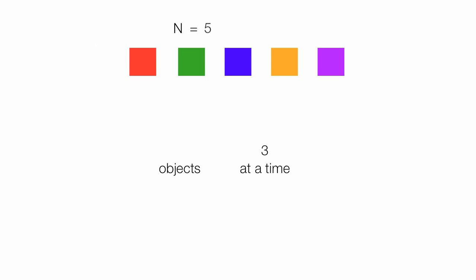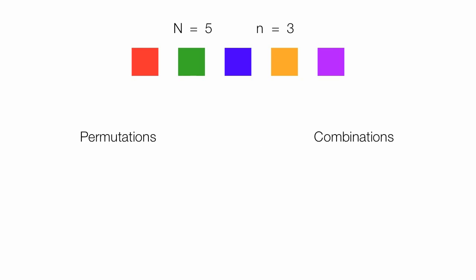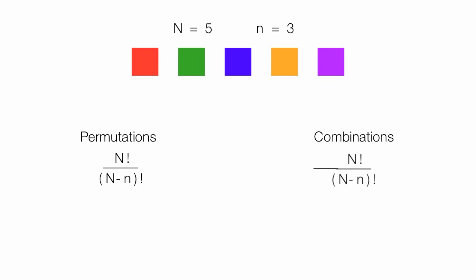N is equal to five, which is the number of total objects, and small n is equal to three, which is the number of objects I'm going to pick at a time. The calculation for permutations is N factorial divided by (N minus n) factorial. The formula for combinations is exactly the same, but I add to the denominator small n factorial. The only difference in these two equations is the small n factorial in the denominator.